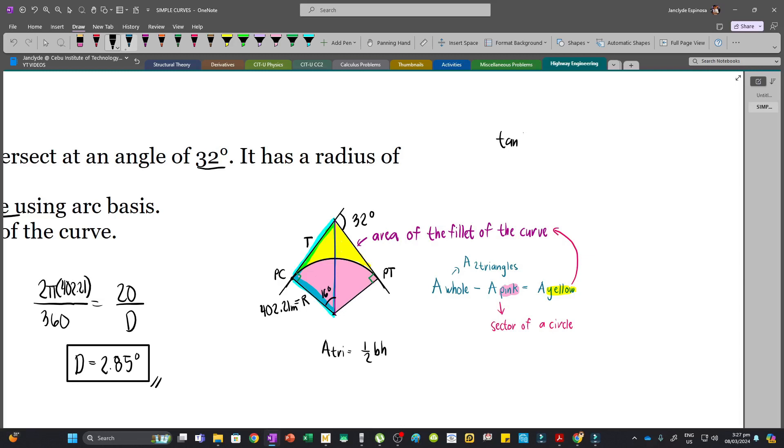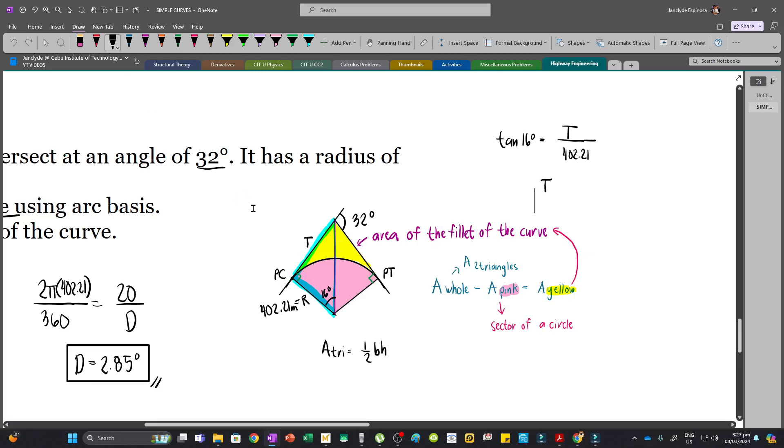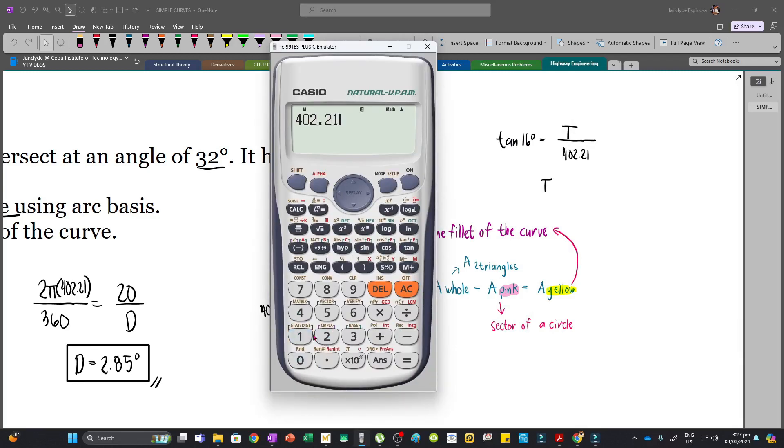And so tangent of 16 degrees is opposite over adjacent which is t, since that's opposite over the adjacent side which is our radius, so we have 402.21. So our tangent distance will be 402.21 times tangent of 16 degrees, so we have 115.33. So this is 115.33.